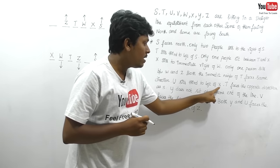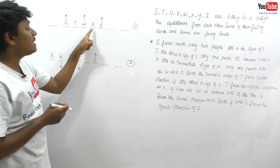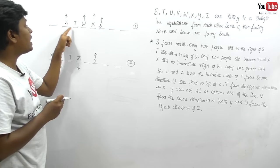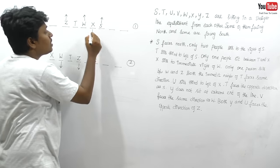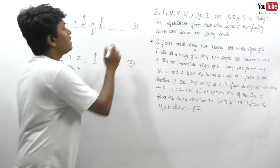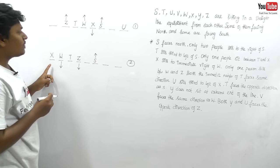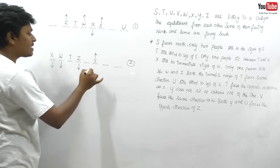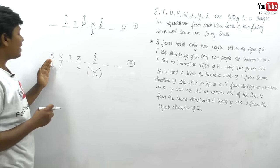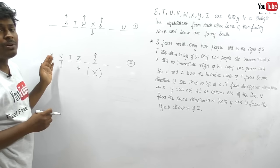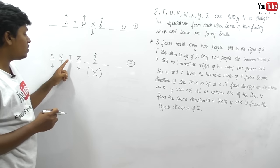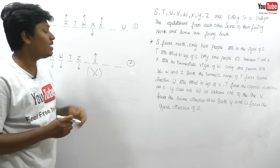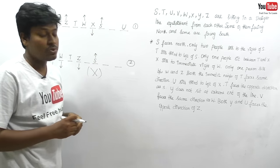U sits third to the left of X. If X faces north, X's left-hand side is toward the left, but counting 1, 2, 3 there is no valid placement. So X must face south — then X's left-hand side is toward the right. Counting 1, 2, 3 to the left of south-facing X, U should be placed. In condition 2, Z is already sitting at that third position, so condition 2 is completely eliminated. Only condition 1 is satisfied.